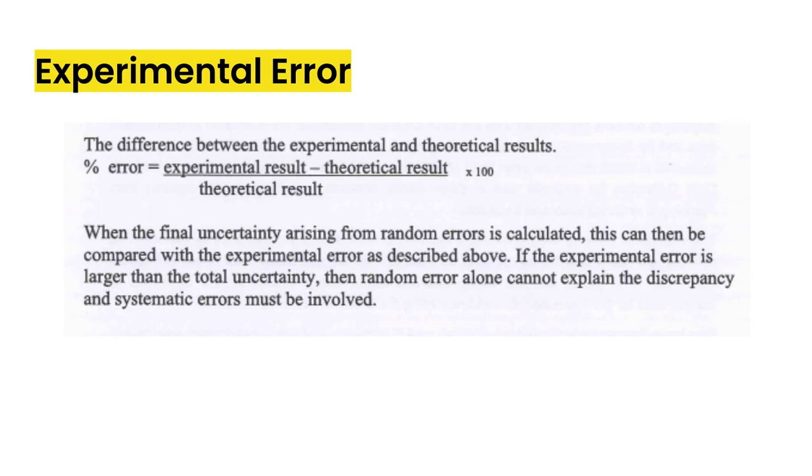The last point I want to point out here is that you can also calculate a percent error for your experiment. And that's the difference between the experimental and theoretical results. You do that by taking the experimental results minus the theoretical result divided by the theoretical results and multiply it by 100.